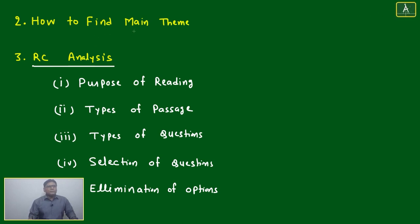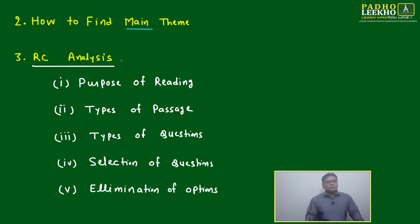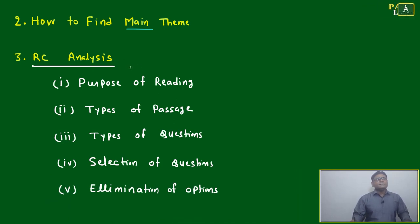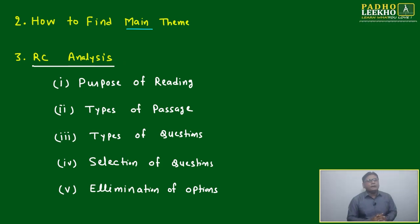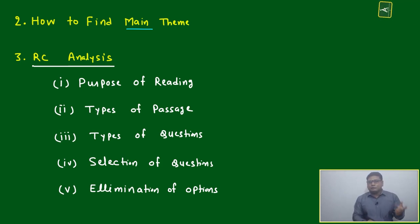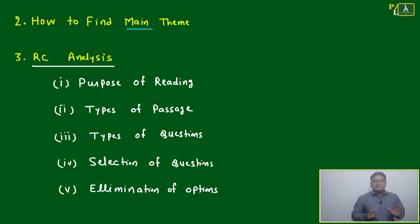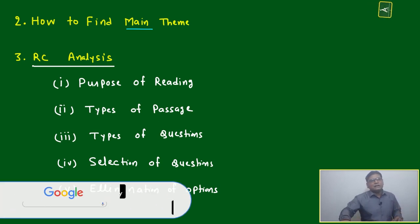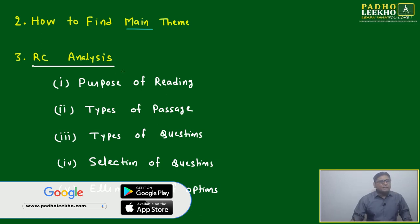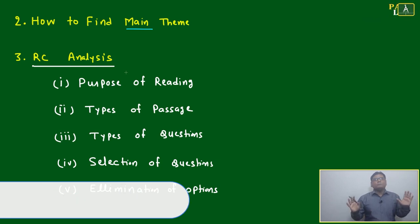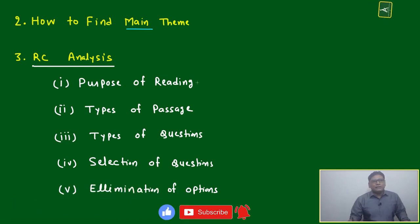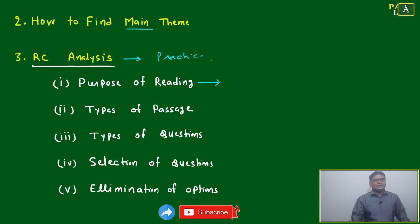Now we'll come to how to find the main theme under bigger picture RC analysis. Similar to the five-point agenda I told for LR — categorization, then thinking of all possible solutions and positive statements — RC also has a five-point agenda that must be followed. If you follow these five points you will feel comfortable, cool, calm, and composed. Purpose of reading must be clear; practice is required without which you will not get conformity.